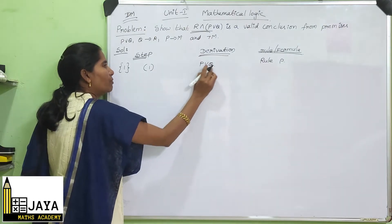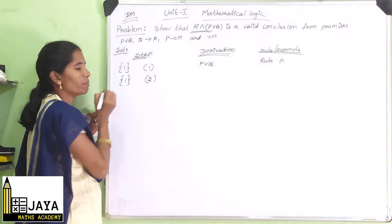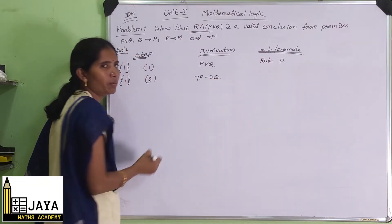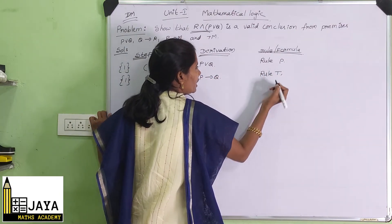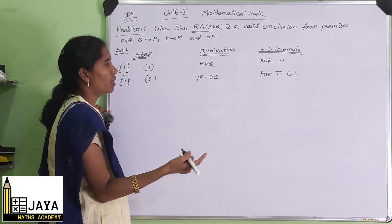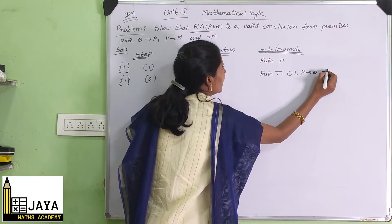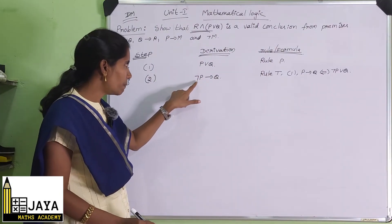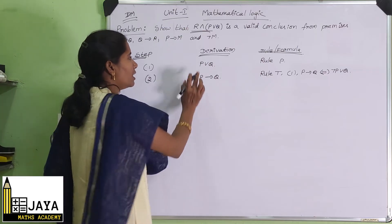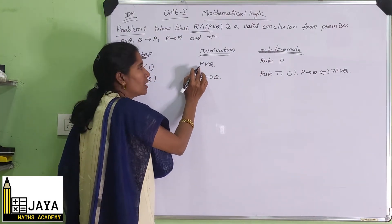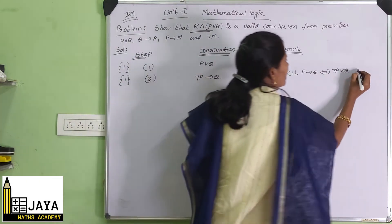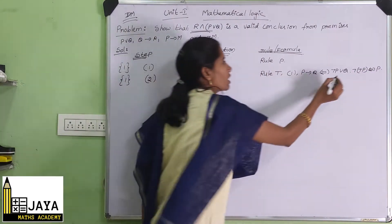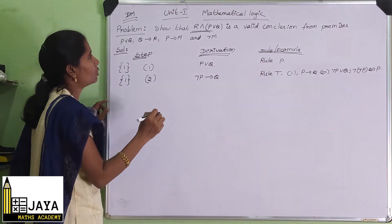Next we use a formula for this. In the second step, for the first premise only, we get negation P implies Q. We are using rule T for the first step. The formula is: P implies Q is equivalent to negation P∨Q. So from P∨Q we can write negation P implies Q, using the fact that negation of negation P implies P. Two formulas we are using here.